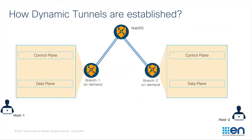Now let's see how the dynamic tunnel gets established. In this topology, we have got a hub edge router located at the top center of the screen, and there are two edge routers configured as on-demand located at branch 1 and branch 2 sites respectively.